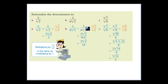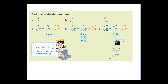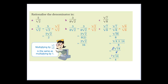Take 3 over 8 root 2 — multiply by root 2 on root 2. Root 2 times root 2 gives us 2, and 8 times 2 is 16, giving 3 root 2 over 16. Now root 7 over root 8: multiply by root 8 over root 8 — root 8 times root 8 gives us 8. Root 7 times root 8 gives us root 56, which breaks down to root 4 times root 14. Root 4 is a perfect square equal to 2, so we get 2 root 14 over 8, which simplifies to root 14 over 4.